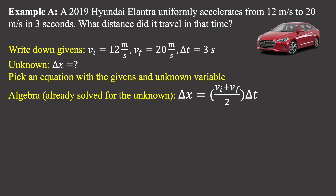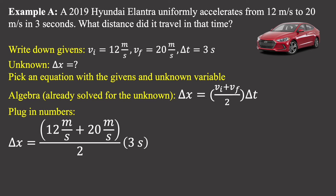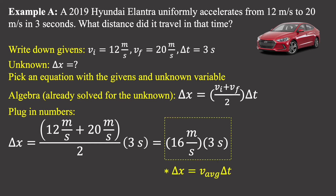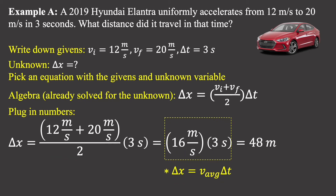We write down the equation. The unknown is delta x, and the equation is already solved for delta x, so there's no algebra — just plug in numbers. Vi is 12, vf is 20, delta t is 3, giving (12 + 20) / 2 × 3. This first kinematics equation isn't really new — vi plus vf over 2 is just average velocity, so displacement equals average velocity times time. The average velocity is 16, and the distance traveled is 48 meters.